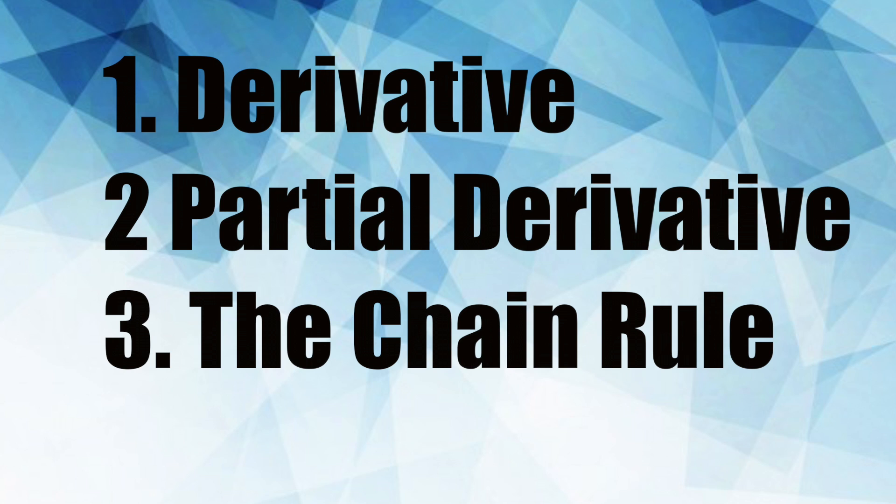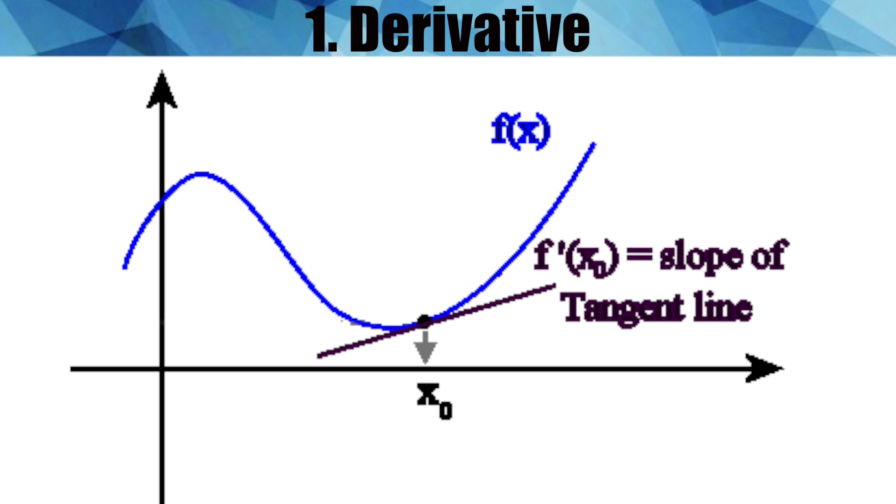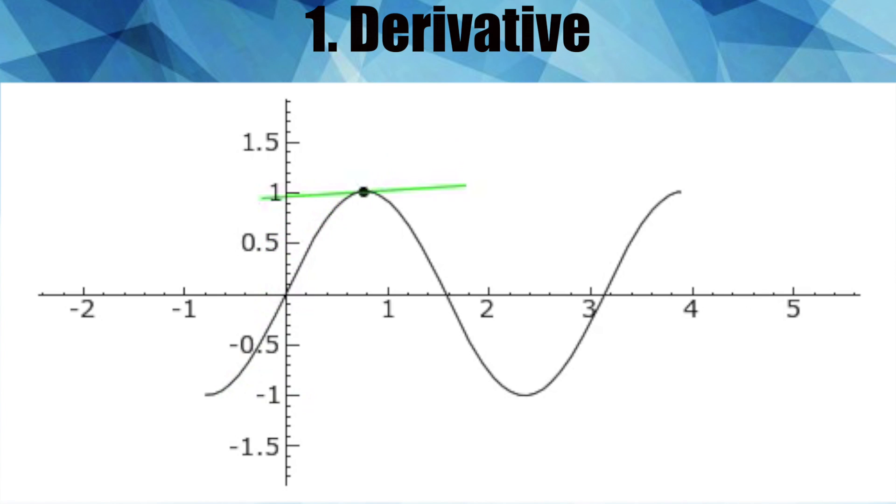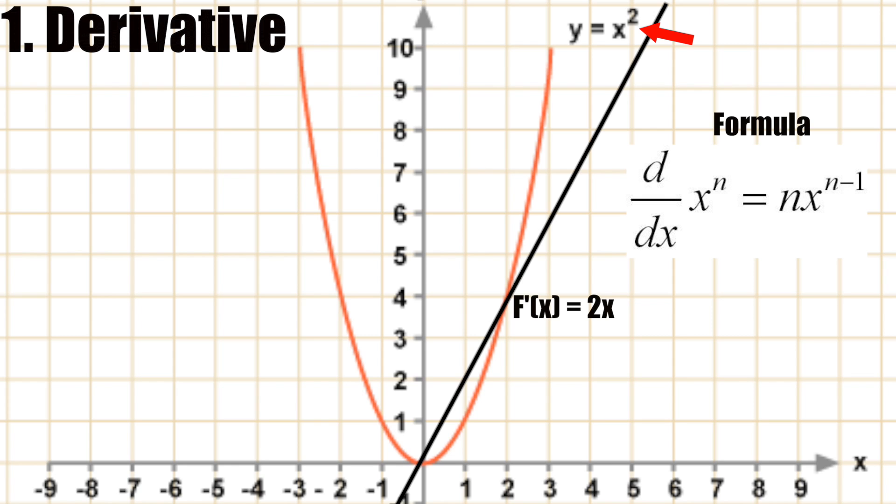So how do we do this? Well we'll need to use calculus. Let's do a little refresher on three terms from calculus we'll need to know. The derivative is a term that means the slope of the tangent line to a curve at a specific point. It measures the rate of change of a function. A derivative of a function f of x gives you another function that returns the slope of f of x at a point x. For example the derivative of x squared is 2x so at x equals 2 the slope is 4.